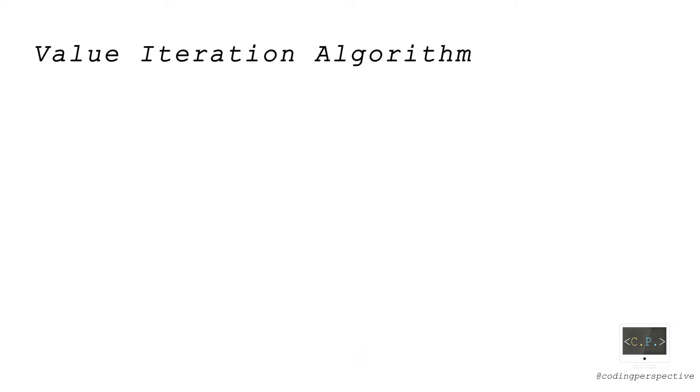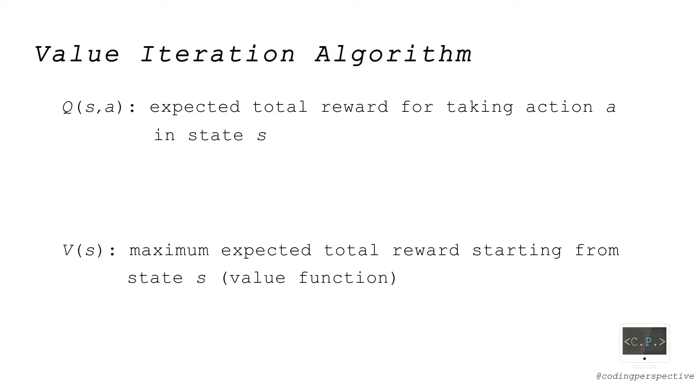To solve this problem, we will use value iteration algorithm. First, let Q(S,A) be the expected total reward for taking action A in state S. Also, let V(S) be the maximum expected total reward starting from state S. V(S) is sometimes called a value function in S. We can calculate Q(S,A) as you see. R(S,A) is the immediate reward after taking action A, and the summation is the expected future reward after moving to the next state S prime. Q(S,A) is simply equal to the summation of these two. Then, maximum value of Q(S,A) over A gives us V(S).